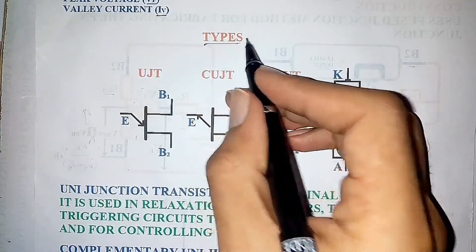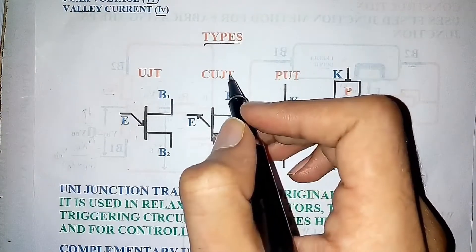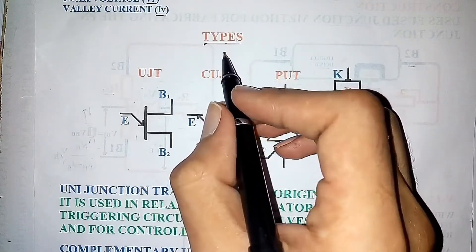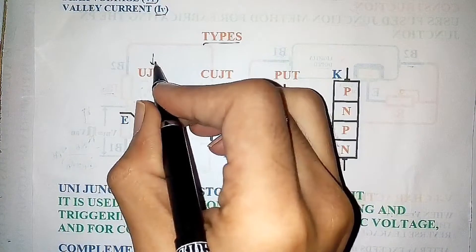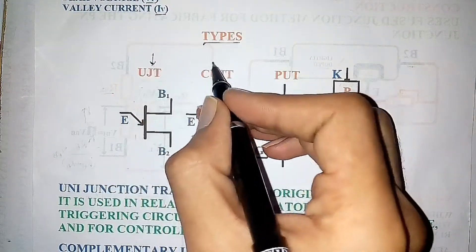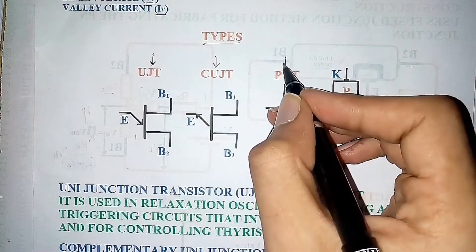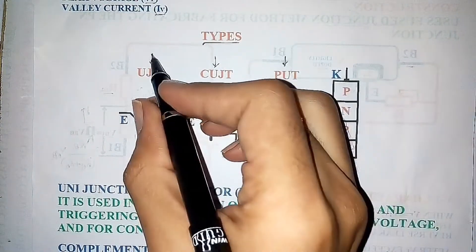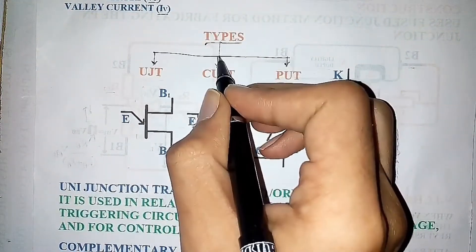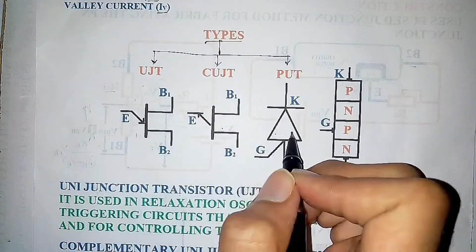Now, let's look at types of UJT. UJT is classified into three which are UJT or original UJT, C-UJT or complementary UJT, and PUT or programmable UJT. These are the symbols of the respective types of UJT.